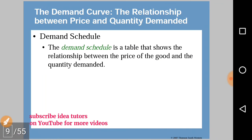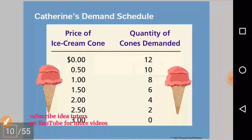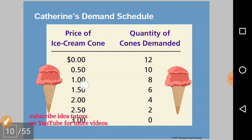The demand schedule is a table that shows the relationship between the price of a good — ice cream in this case — and the quantity demanded of that good. We can see that as the price is increasing, the quantity demanded is decreasing, which confirms the law of demand.